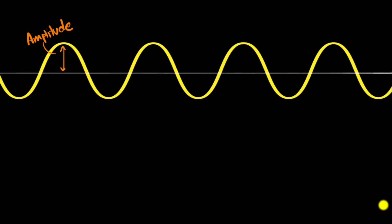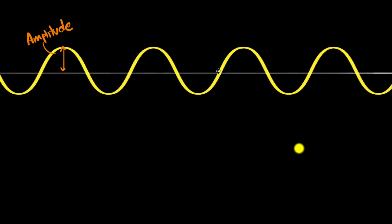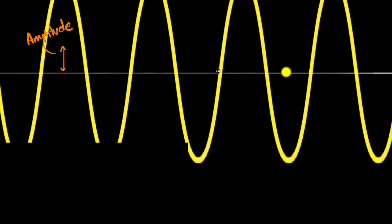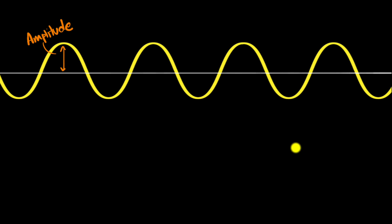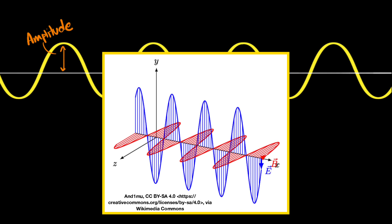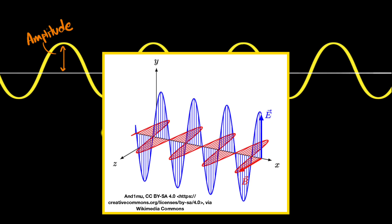This would be a very small amplitude wave; this would be a very large amplitude wave. Remember, when I say height, there is nothing physical here — these are electric and magnetic field values. Going back to the animation, it's more appropriate to think of amplitude as the maximum strength of the electric or the magnetic fields.